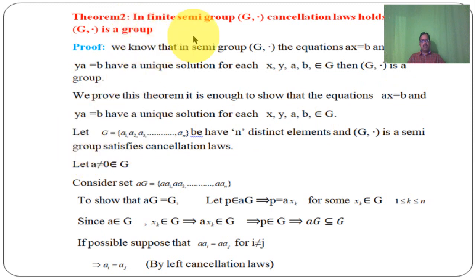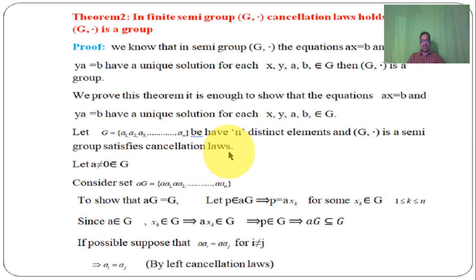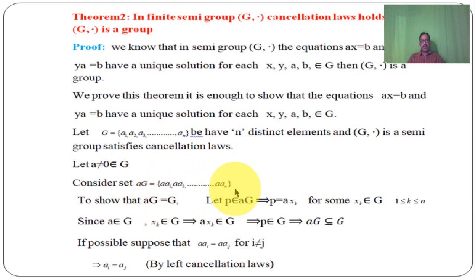G is a finite semigroup, so G equals {A1, A2, A3, ..., An}, having n distinct elements. Let A (not equal to 0) belongs to G. Consider the set AG equal to {AA1, AA2, ..., AAn}. To show AG equal to G, first show AG is a subset of G. Let P belongs to AG; then P equal to A·Xk for some Xk belongs to G, where k runs from 1 to n. Since A belongs to G and Xk belongs to G, by closure property A·Xk belongs to G, so P belongs to G. Therefore AG is a subset of G.